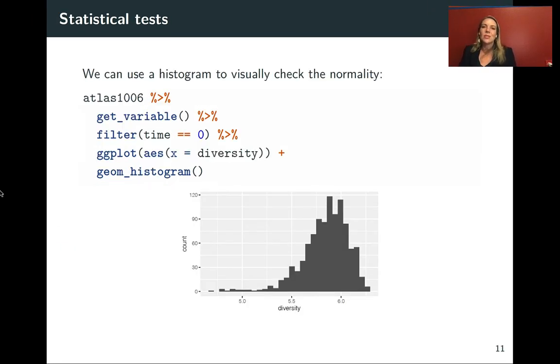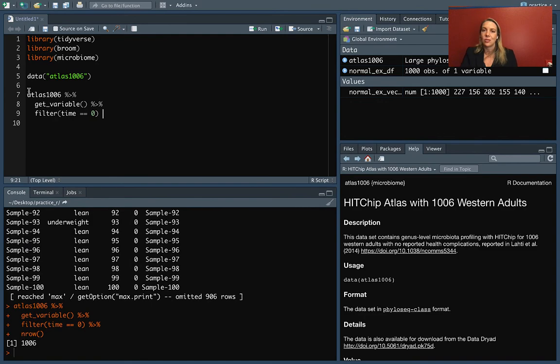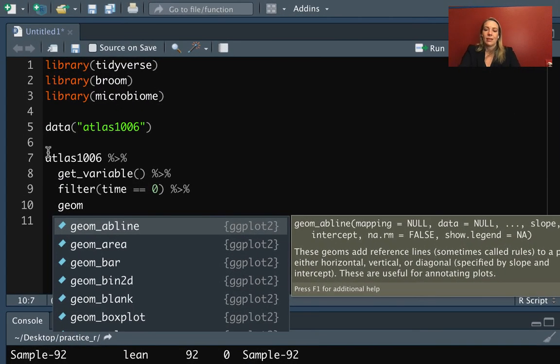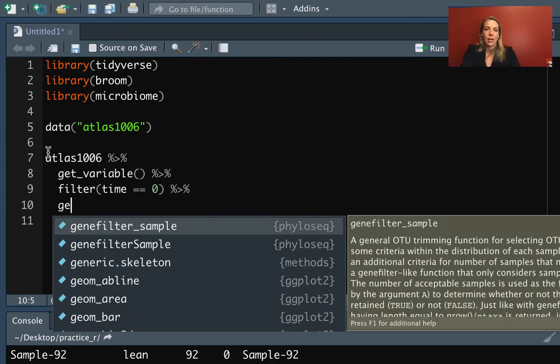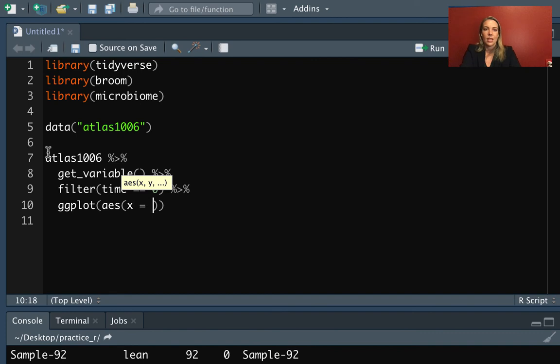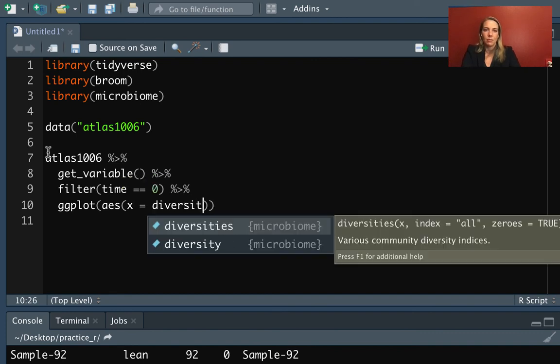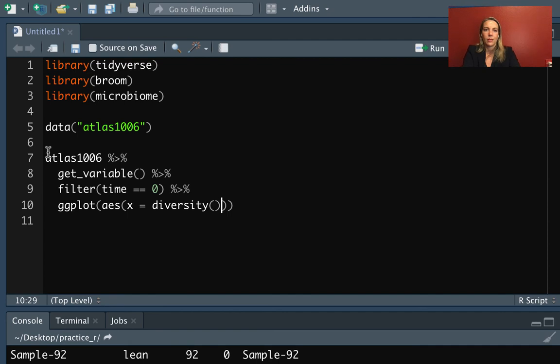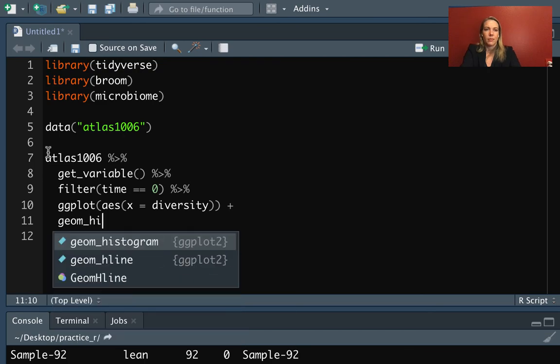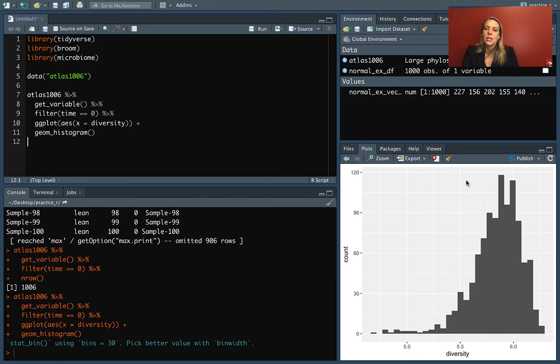The next thing that we can do is we can do a visualization, a histogram to take a look at this data and see if it looks like it's normally distributed. We have things in a data frame now, so we can pipe directly into ggplot. In this case, we want to look at the diversity column, and then we want to do a histogram. Here's what that looks like. We can see it certainly does not look like it's normally distributed.